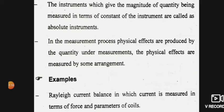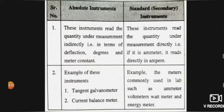In the measurement process, physical effects are produced by the quantity under measurement. These physical effects are measured by some arrangement. For example, in a tangent galvanometer, the current is measured in terms of force and parameters of the coil.